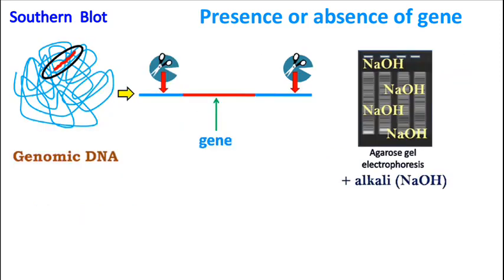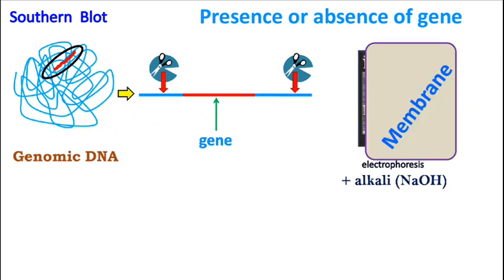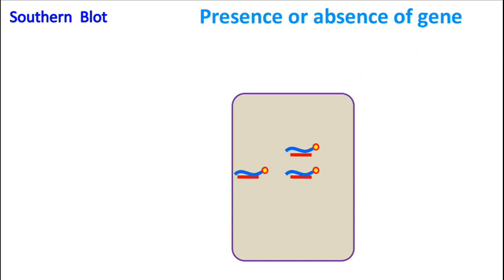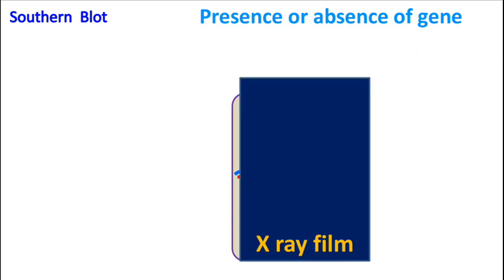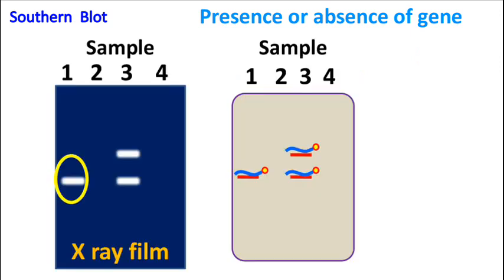As described earlier, the fragments are transferred on the membrane and hybridized with a probe followed by autoradiography. The presence of a band in the autoradiogram indicates that the gene is present, whereas the absence of band indicates that the gene is absent.